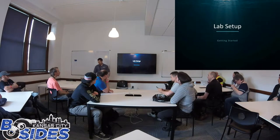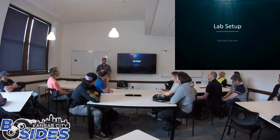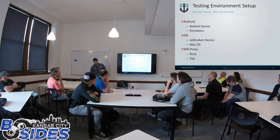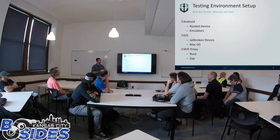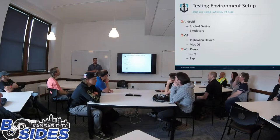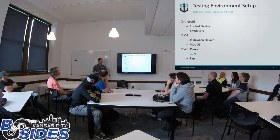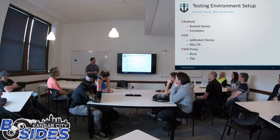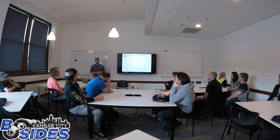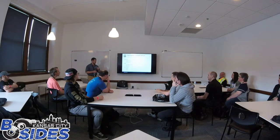Lab setup — what I'm going to cover is black box testing and how to get that set up for Android and iOS. Here's kind of the things you're going to need. Starting with Android, you really need a device that's rooted so that you can have root access, which is going to allow you to do most of your tasks. You can get away with using emulators, but it's not as easy in some circumstances.